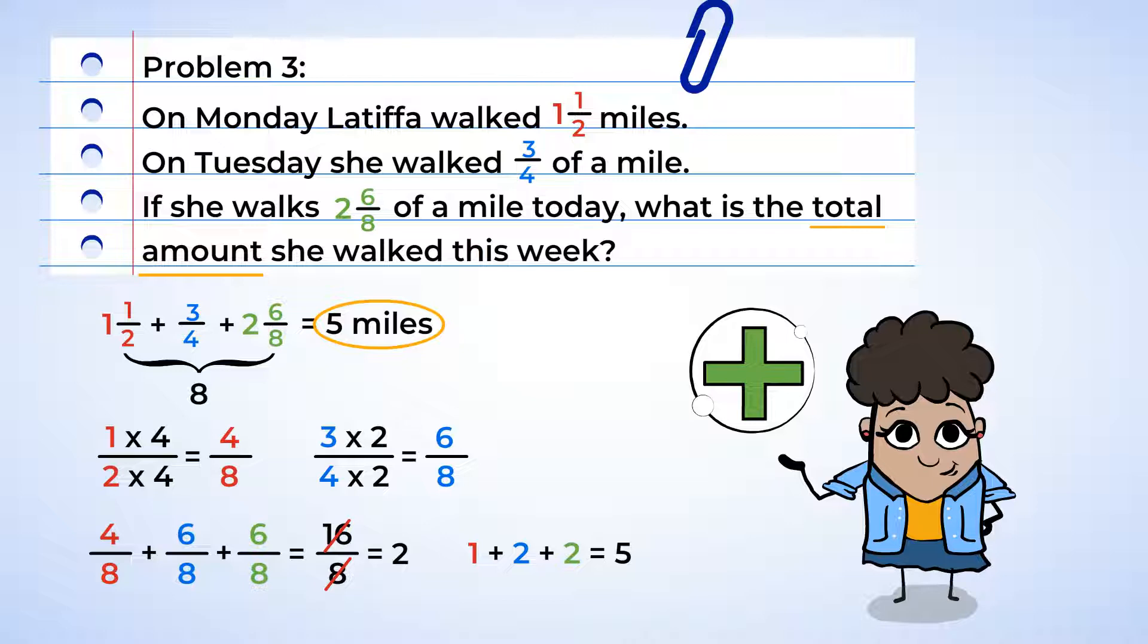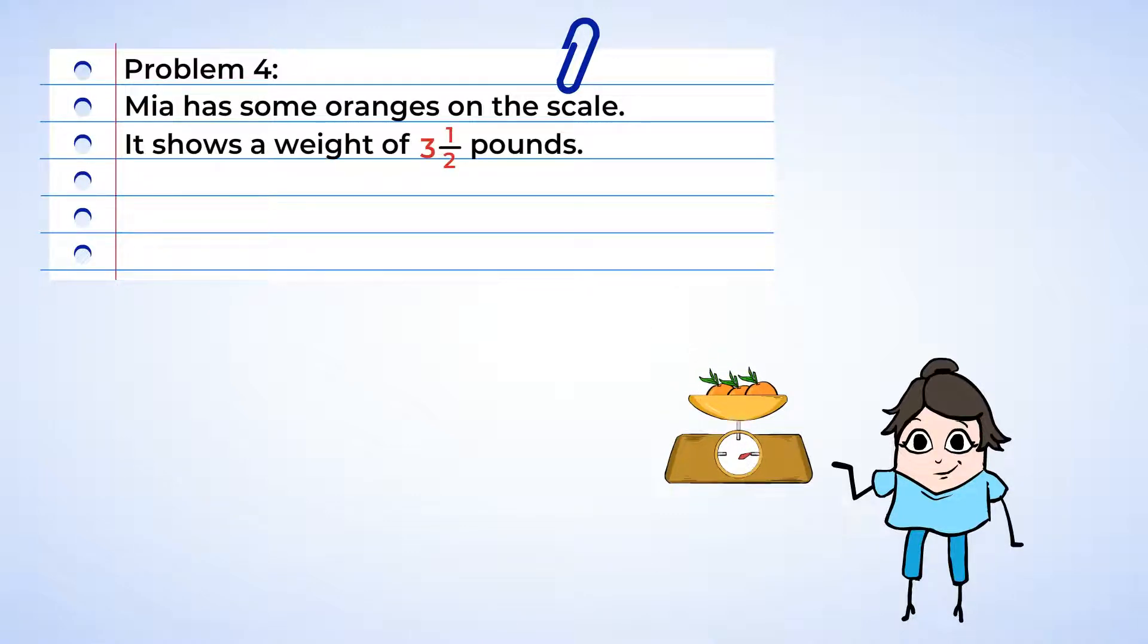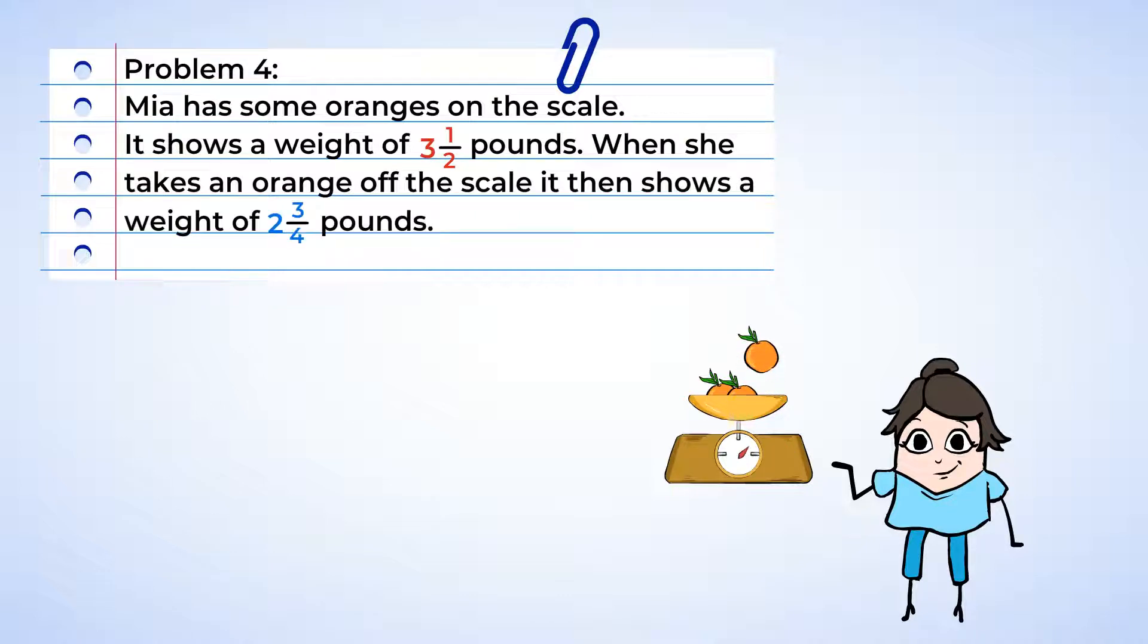Since we've been walking so much, and now that we're walking past the store, what do you say we stop for a little bit of a snack? Oh, it's Mia! I wonder what she's going to buy. Now Mia has some oranges on a scale, and it shows a weight of 3½ pounds total. When she takes one of the oranges off the scale, it now shows a weight of 2¾ pounds. So how much did that one orange weigh?